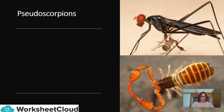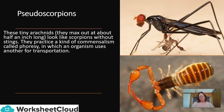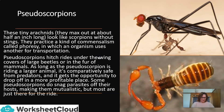Let's take a look at pseudoscorpions. These are also tiny arachnids — they max out at about half an inch long. They look like scorpions without stings. They practice a kind of commensalism called phoresy, in which an organism uses another for transportation — basically, they hitch a free ride. Pseudoscorpions hitch rides under the wing covers of large beetles or in the fur of mammals. As long as the pseudoscorpion is riding a large animal, it's comparatively safe from predators and gets the opportunity to drop off in a more profitable space. Some pseudoscorpions do snag parasites off their hosts, making them mutualistic — but most are just there for the free ride.